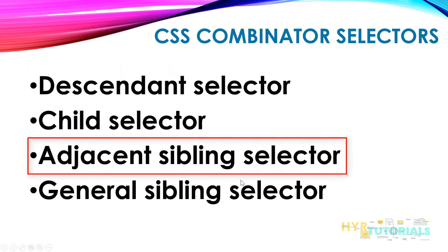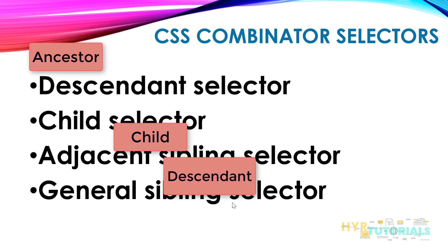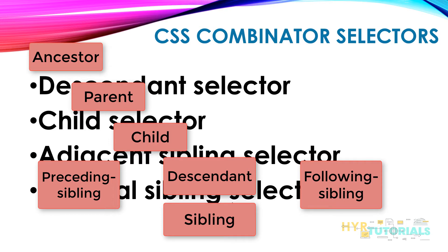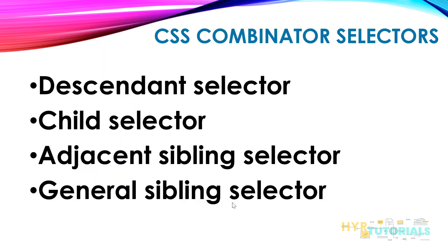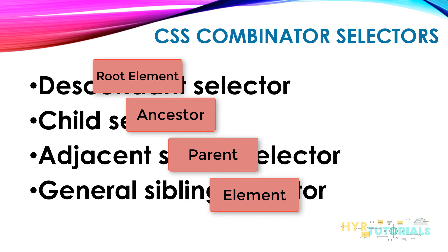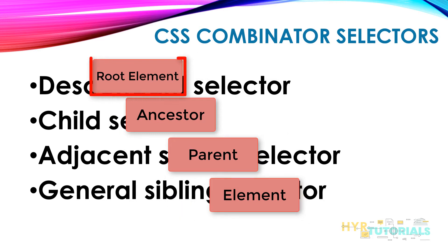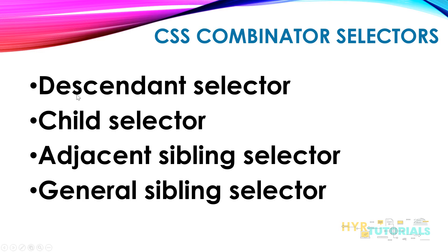If you already know XPath relations, you might notice fewer relations here compared to XPath, which has child, descendant, ancestor, parent, siblings, preceding sibling, and following sibling. In CSS we have only four relations. The main thing in CSS is that the flow of finding elements is one-way — you cannot go upward like with XPath's parent or ancestor. You can only go downward from the root element. That is why we have only four relations: descendants, child, and siblings — which include adjacent and general sibling.